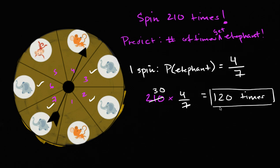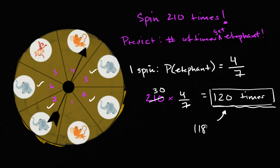All you would say is: if I had to predict it, out of all the different possibilities — I can get the elephant anywhere between zero and 210 times — before I even start spinning, I'll say this is the most reasonable prediction: that I'm going to get it four-sevenths of the time. But it's not saying I'm definitely going to get it 120 times. It's not saying that 118 times or 129 times aren't reasonably possible as well. It's just saying this is a reasonable prediction. I'm using the theoretical probability of four-sevenths, and so if I'm going to do something 210 times, I could expect it to happen four-sevenths of the time. I don't know for sure it's going to happen four-sevenths of the time, but that is a reasonable prediction to make.